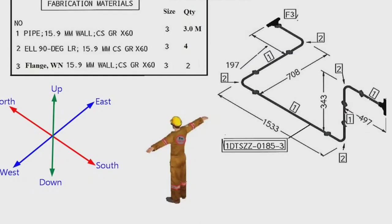We will try to read this pipe isometric drawing. This pipeline consists of a spool, and this is the spool number. This is the list of materials for fabrication which is used in this pipeline. Let's learn the materials on this pipe drawing. Detail number 1 was used in several places in the pipe drawing. Let's look at the material list.